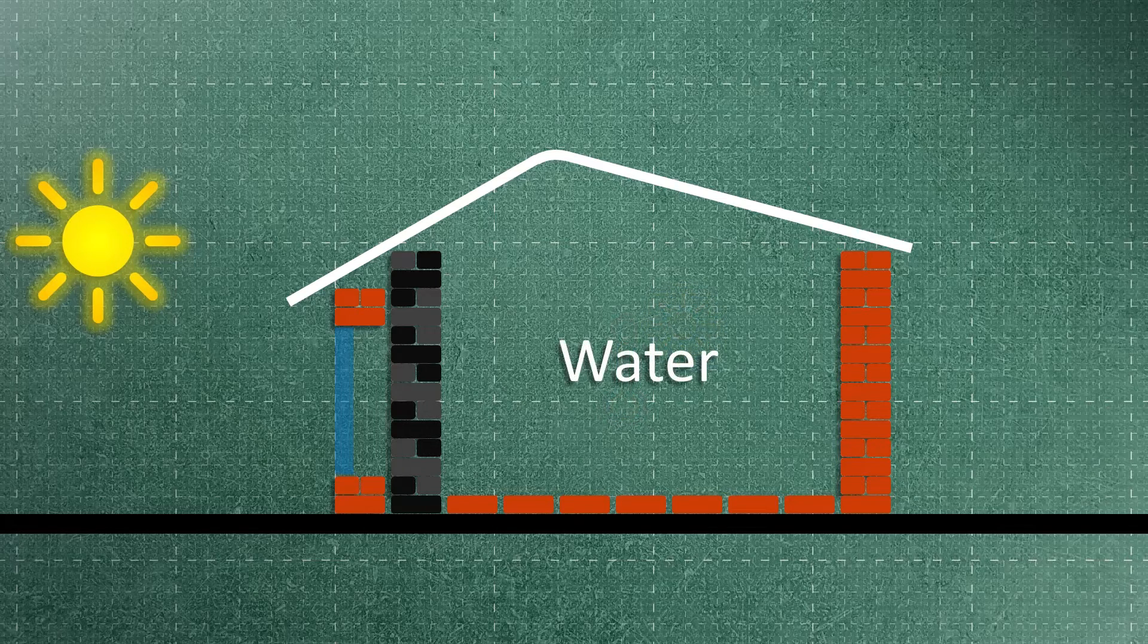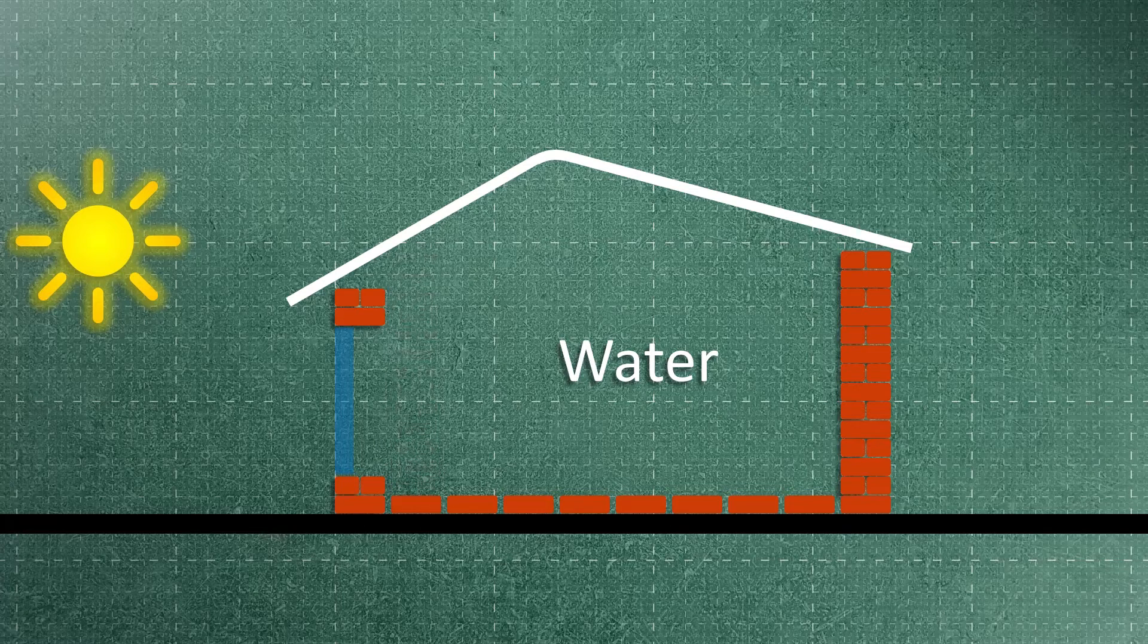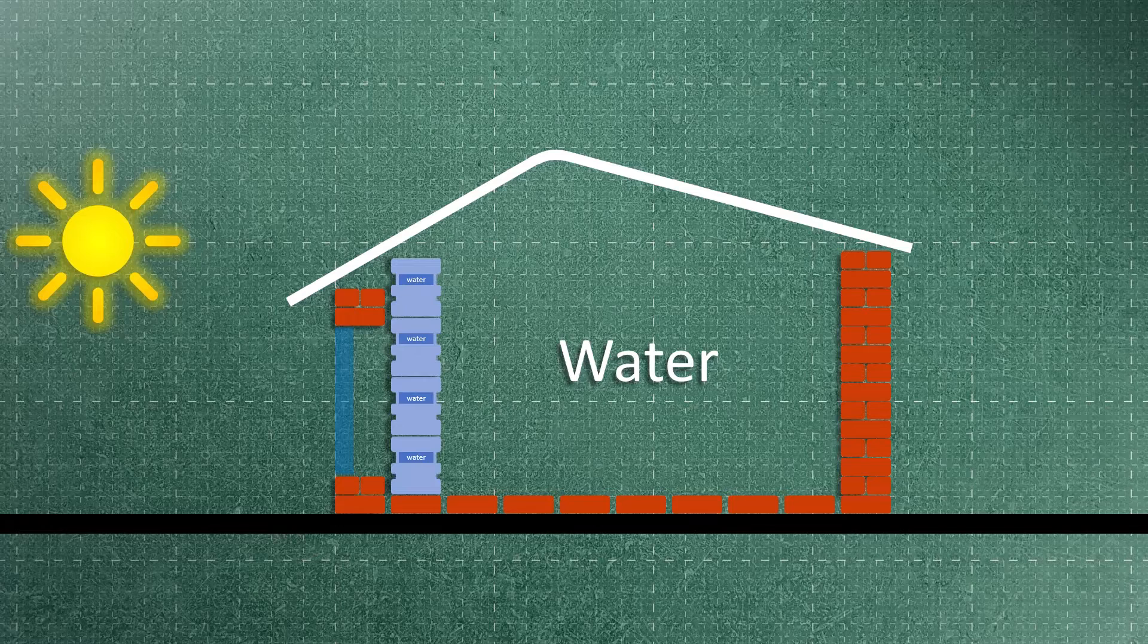Water can be used instead of building materials in the construction of Trombe walls. Water has a high heat capacity. This feature helps us to store more energy in a smaller volume.